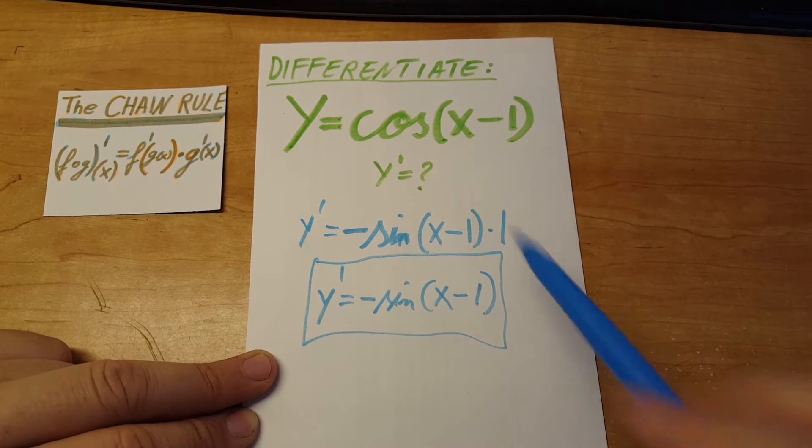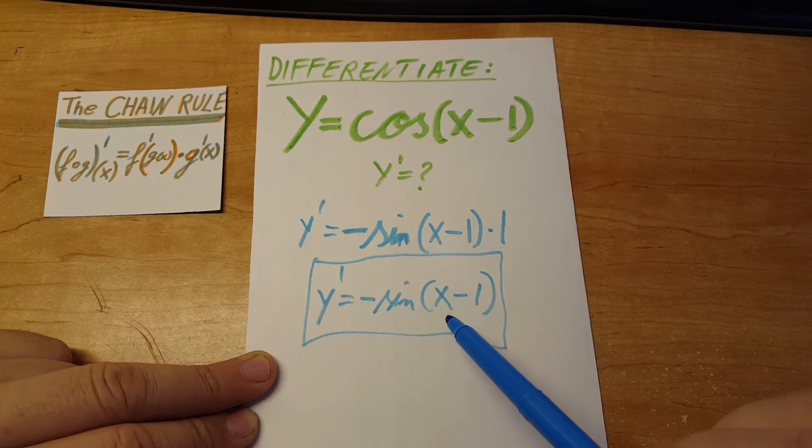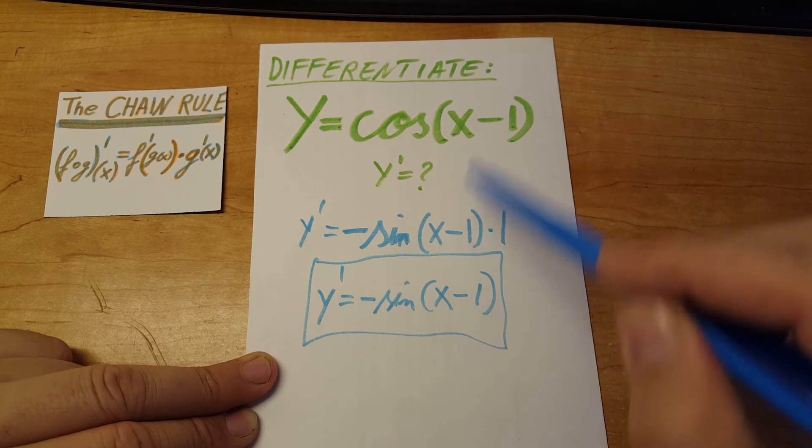And when you're dealing with cosine of x, it would be negative sine of x because you took the derivative of the argument, just like we handled it here.